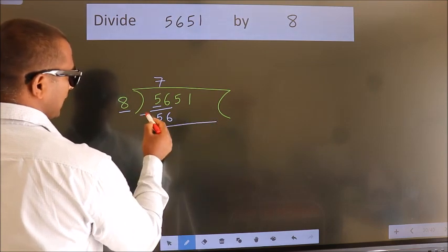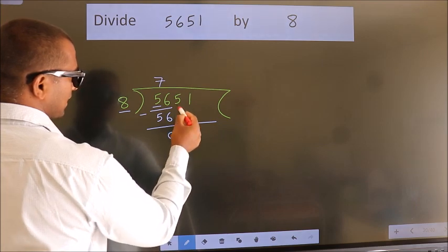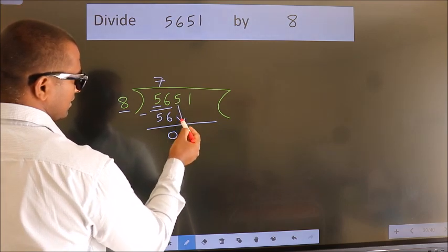Now we should subtract. We get 0. After this, bring down the beside number. So, 5 down.